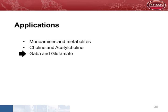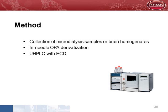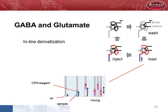The third application is the analysis of GABA and glutamate. The method is similar to the analysis of monoamines, except for the in-needle derivatization. GABA and glutamate are not electrochemically active; therefore an OPA derivatization is required. Our injection program is modified to facilitate the OPA derivatization: first we aspirate sample and OPA reagent, then we move the sample back and forth to mix, and finally it is moved to the loop and injected.